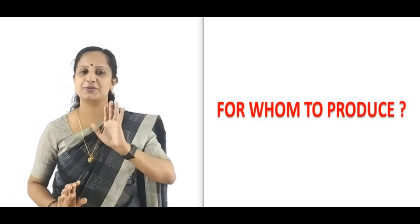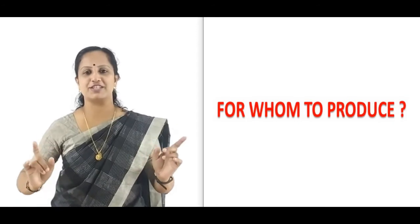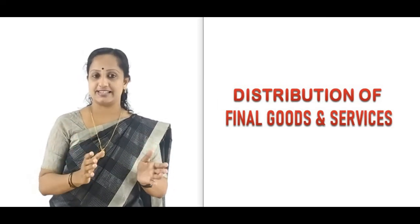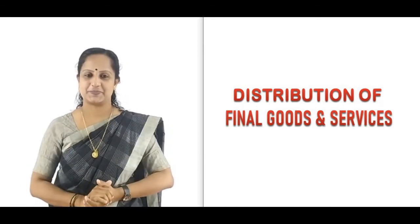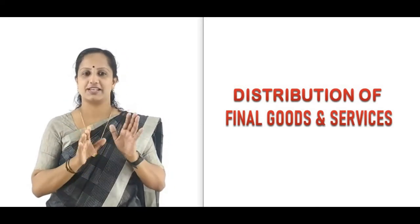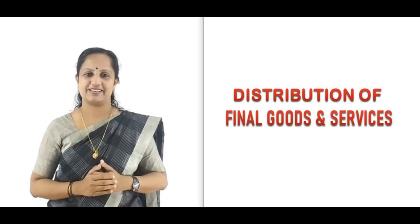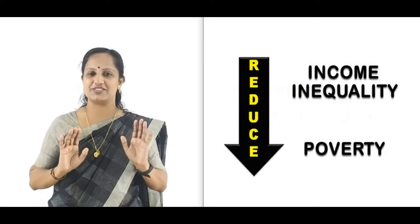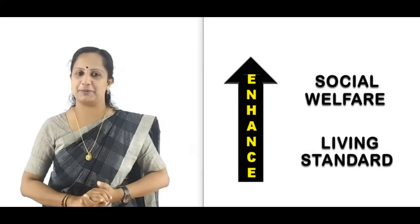The third question is: for whom to produce? This is the problem of distribution of national income — the purposeful distribution of final goods and services produced, i.e., who gets what and how much. The economy needs to decide the best suitable mechanism for distribution of final products among different sections of society. The objective is to reduce inequality of income, reduce poverty, and enhance social welfare and standard of living. This problem concerns who gets more or less, and which goods should be made available free or at nominal price and to which segment.